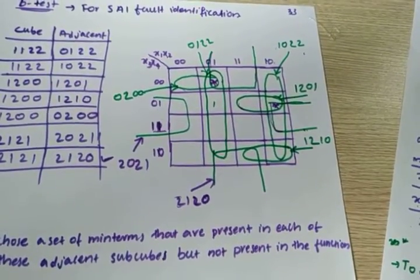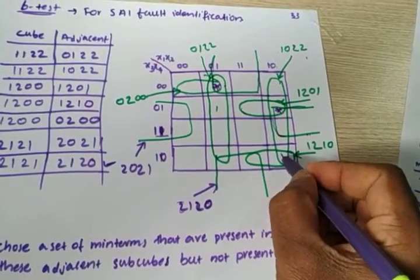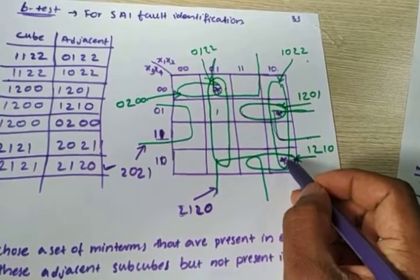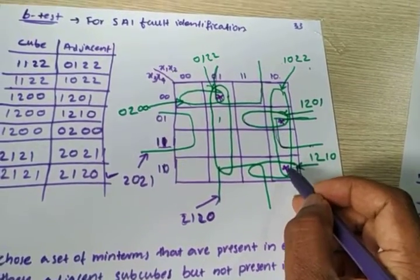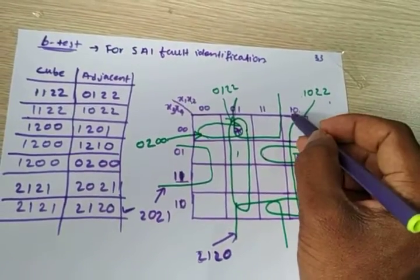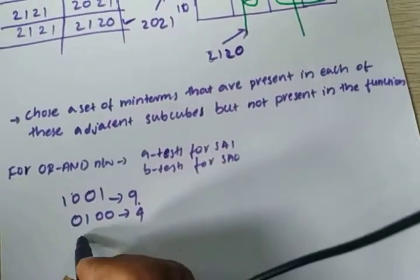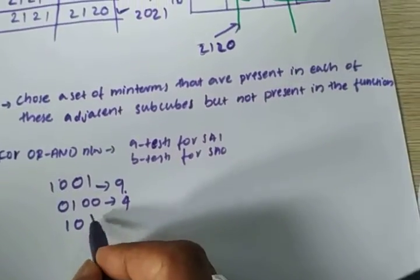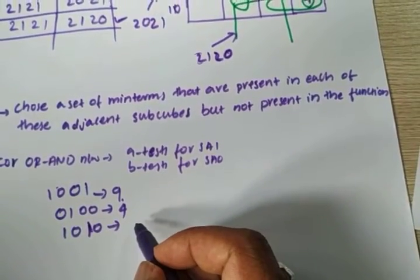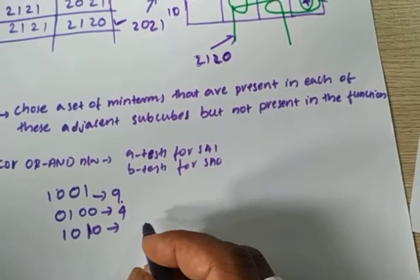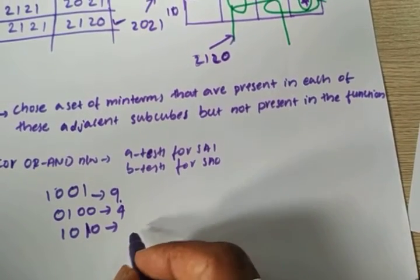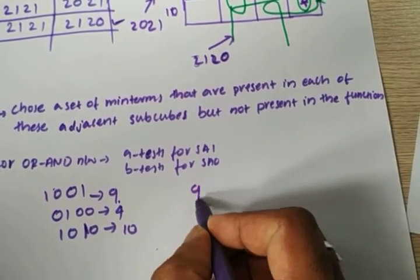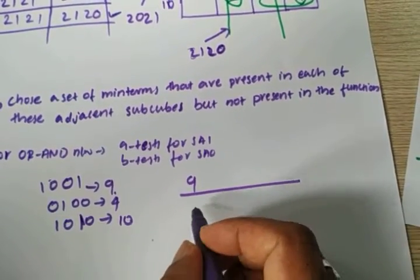The uncovered minterm — this one is not covered yet, so this is another minterm. The minterm corresponding to it is 1·0·1·0, which is 10. So you can write the minterms as 9, 4, and 10.